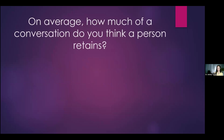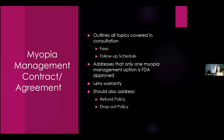On average, a person remembers only about 17 to 25% of a conversation. So I recommend having some sort of myopia management contract or agreement. It doesn't have to be formal or signed, but it should outline all the topics covered in the consultation, the fees, the follow-up schedule, the fact that only one myopia management option is FDA approved and everything else is off-label. You may want to include lens warranty if doing orthokeratology, the refund policy, and the dropout policy. Lots of practices make this a signed formal agreement — that may work for your patient base, but it just doesn't work for mine.